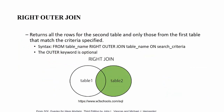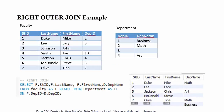The right outer join is similar to the left join, except it returns all results from table 2 and the matching results from table 1. If we swap the positions of the two tables, we can use a left join to get a similar result. In the right join, we get all results in table 2 plus the matching values from table 1 based on the search condition.